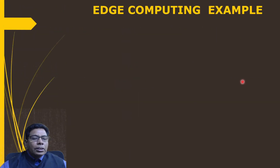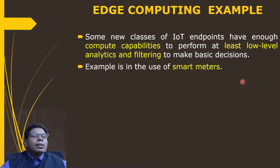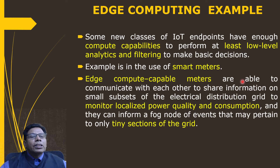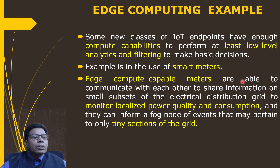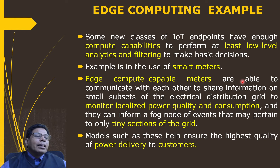Some new classes of IoT endpoints have enough computing capability to perform at least low-level analytics and filtering to make basic decisions. An example is smart meters: edge-compute-capable meters are able to communicate with each other to share information on a small subset of an electrical distribution grid, monitoring localized power quality and consumption. They can inform the fog node of events pertaining to only a tiny section of the grid, including quality of power delivery to customers.